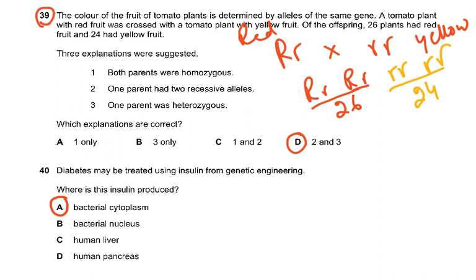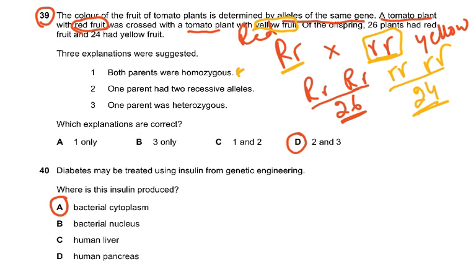Coming to question 39, a genetics question. The color of tomato fruit is determined by alleles of the same gene. A tomato plant with red fruit was crossed with a yellow-fruit plant. Of the offspring, 26 had red fruit and 24 had yellow fruit — roughly a 1:1 ratio. Whenever the ratio is 1:1, it is a heterozygous crossed with a homozygous recessive. So one parent had two recessive alleles and one parent was heterozygous — both statements 2 and 3 were correct.